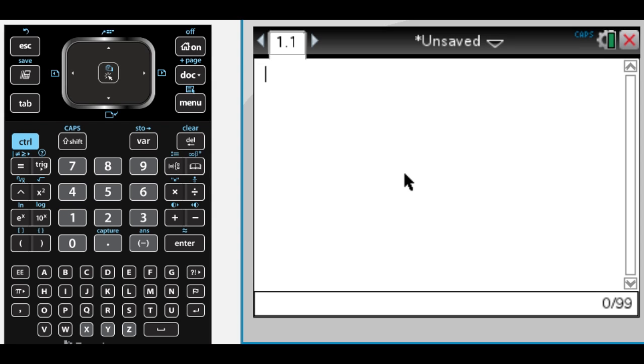All right, this will be 2005 Form B number 3 from the AP Calculus AB exam.